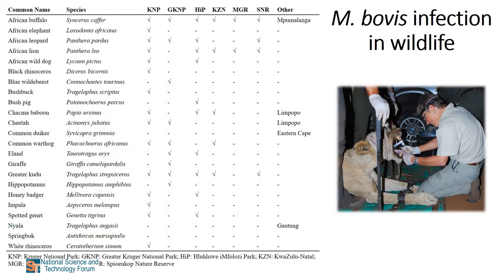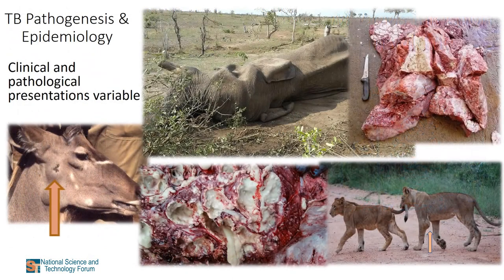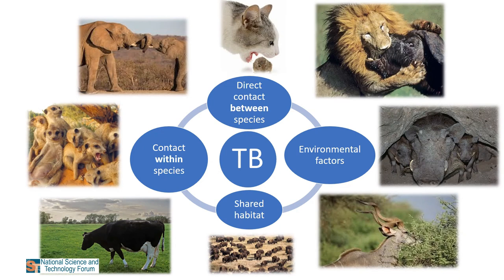With the advent of new techniques and species-specific tools developed by our group to detect M. bovis infection in wildlife, our understanding of wildlife TB continues to evolve every year. To date, 24 wildlife species in South Africa have been confirmed infected with M. bovis, with the majority identified within the last decade. It has become apparent that the clinical and pathological presentations vary between each species, due to different types of interactions — including direct contact between species, contaminated environments, shared habitats, and close contact within animal groups.